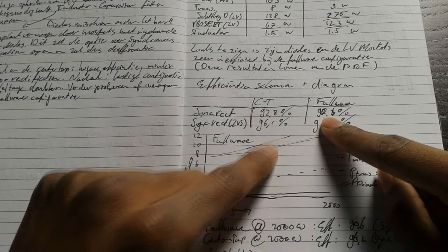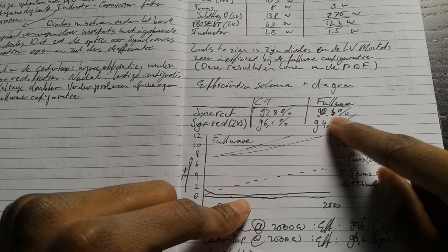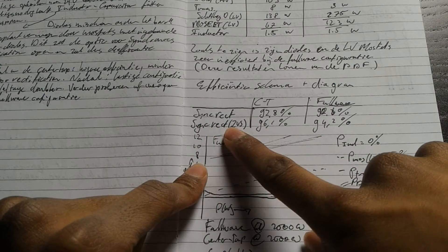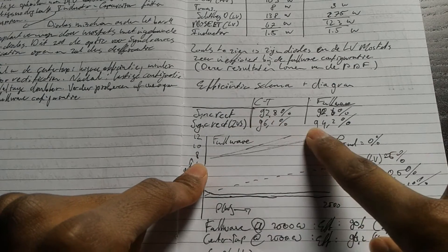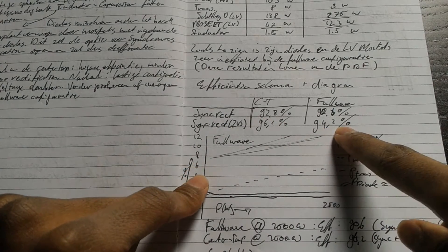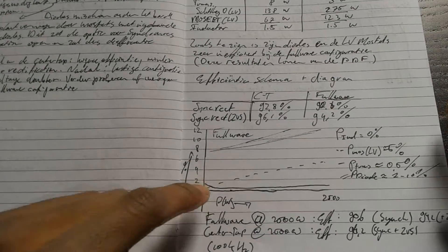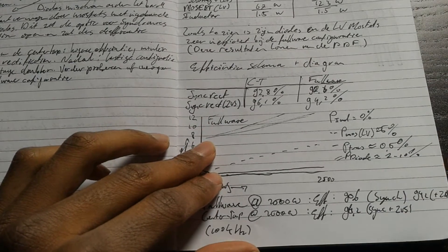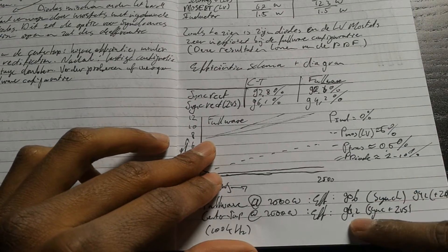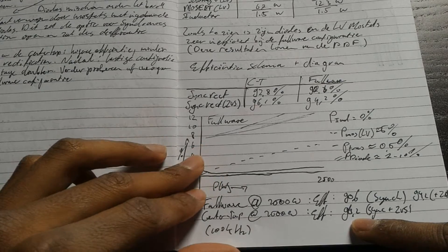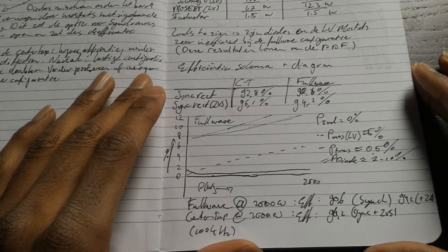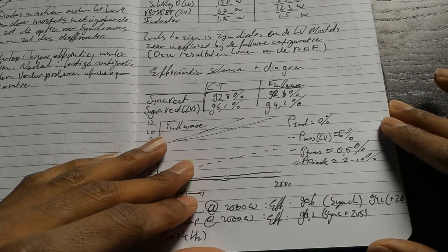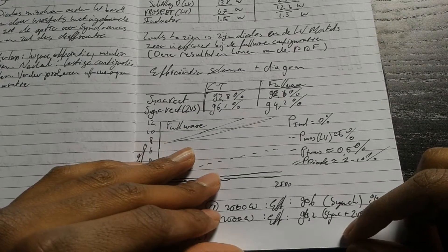For full wave synchronous rectification, efficiency is almost 92.6%. If we add synchronous rectification with zero voltage switching, we get 94.2% efficiency. That's a lot. And if we add more things to it, we can almost reach 96% efficiency. But I am not very experienced in power electronics, so I hope I can at least reach 90% efficiency.